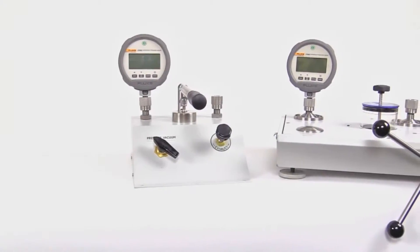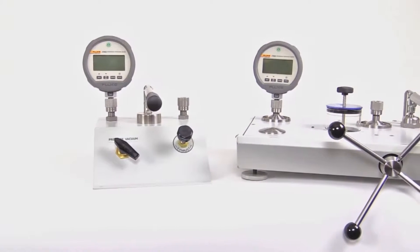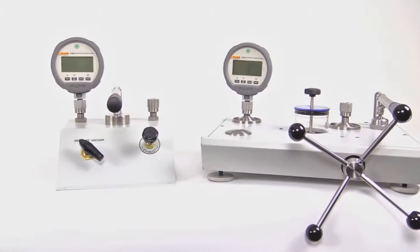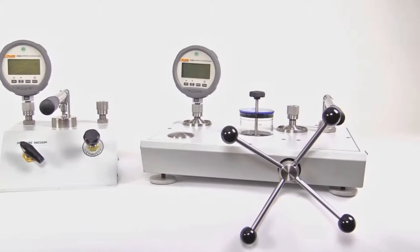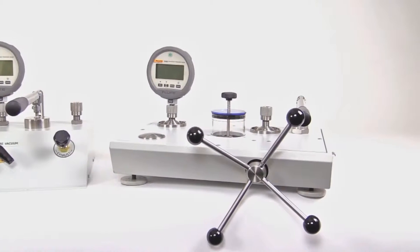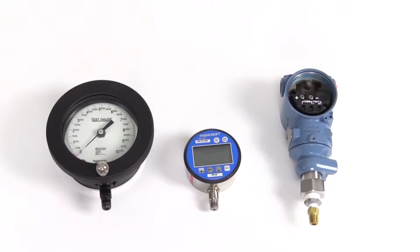Fluke calibration's P5500 pressure comparators and 2700G reference pressure gauge combine to provide an economical, easy-to-use alternative to traditional deadweight testers and pressure controllers. They can be used to perform a wide range of pressure calibrations including dial gauges, digital test gauges, and pressure transmitters.